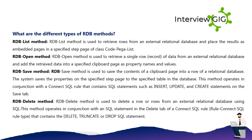What are the different types of RDB methods? RDB List method is used to retrieve rows from an external relational database and place the results as embedded pages in a specified step page of class code-peg-list. RDB Open method is used to retrieve a single row (record) of data from an external relational database and add the retrieved data into a specified clipboard page as property names and values. RDB Save method is used to save the contents of a clipboard page into a row of a relational database — the system saves the properties on the specified step page to the specified table in the database. This method operates in conjunction with a connect SQL rule that contains SQL statements such as insert, update, and create statements on the save tab. RDB Delete method is used to delete a row or rows from an external relational database using SQL, operating in conjunction with an SQL statement in the delete tab of a connect SQL rule that contains the delete, truncate, or drop SQL statement.